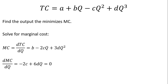Moving on — we have our total cost equation again, and this time we want to find the output that minimizes marginal cost. We get marginal cost by taking the derivative of total cost with respect to output. The derivative of A is zero, the derivative of BQ is B, and the derivative of minus CQ squared — bring down the two in front and subtract one from the exponent — gives minus 2CQ.